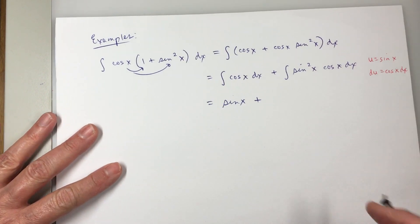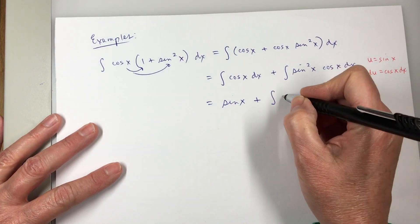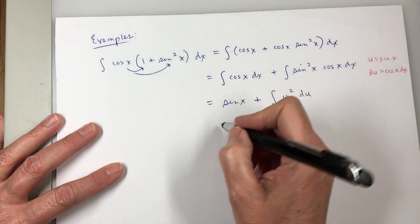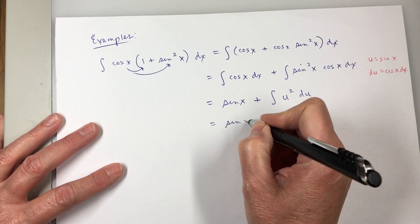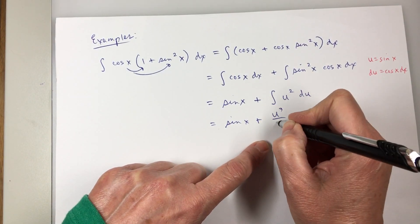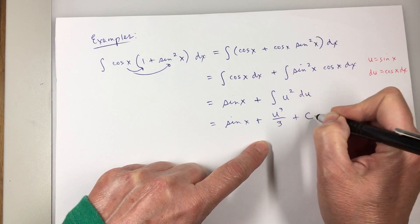So I can say for the second part, this is the integral of u squared du. And the integral of u squared—sine x here from the first part there—is u cubed over three plus c.